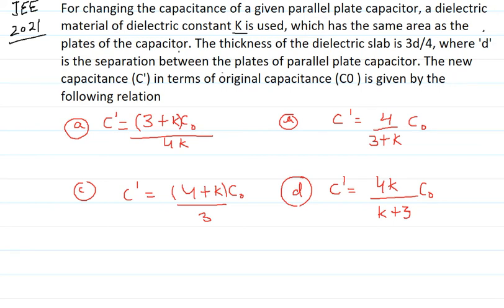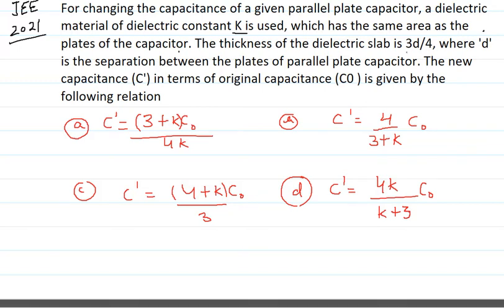Hello students, good morning. Today we are going to solve a problem from JEE Mains 2021. This problem involves a parallel plate capacitor. We want to change the capacitance using a dielectric material of dielectric constant K, which has the same area as the plates. The thickness of the dielectric slab is 3d/4, where d is the separation between the plates.